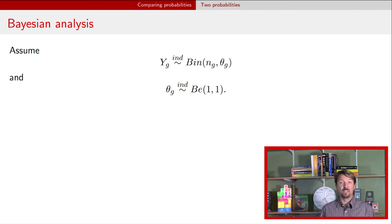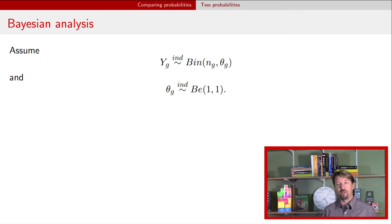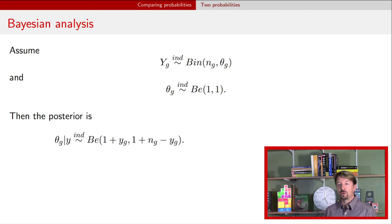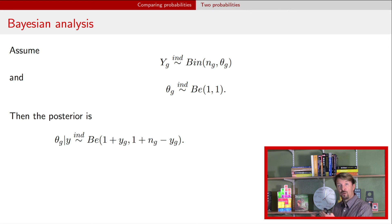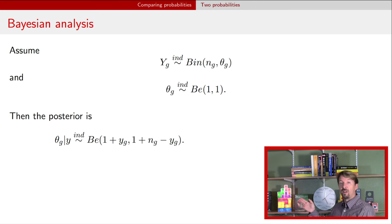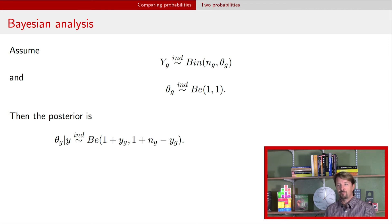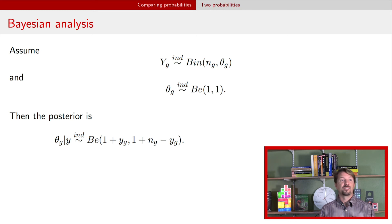In a Bayesian analysis, we need a prior for both of our parameters. We're going to assume they are independent uniform distributions, which is the same as a beta(1,1) distribution. Because we've assumed independence in this distributional form, we know that the posterior is another beta. Each parameter gets its own posterior: the posterior for theta 1 is beta(1 + y1, 1 + n1 − y1), and the posterior for theta 2 is the same thing replacing the 1s with 2s. You can use these posteriors to calculate posterior expectations and credible intervals for each of the individual parameters.